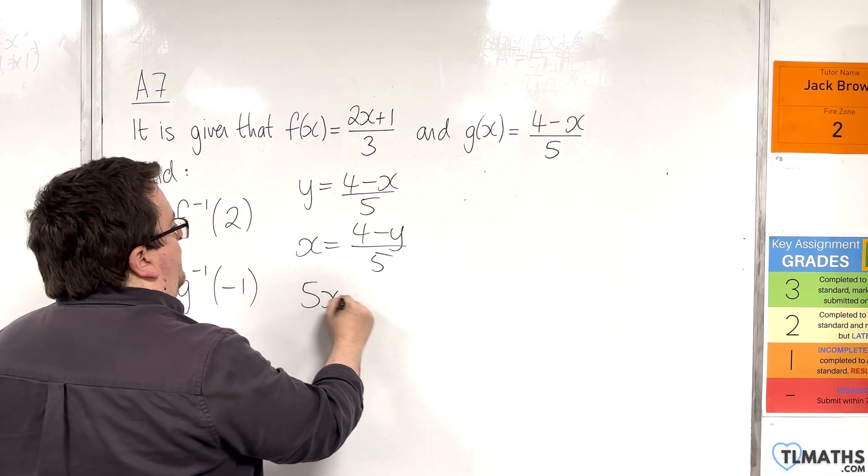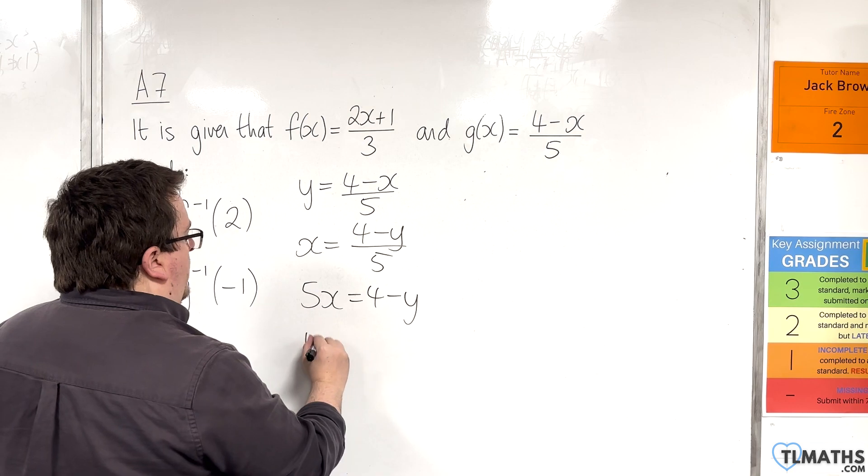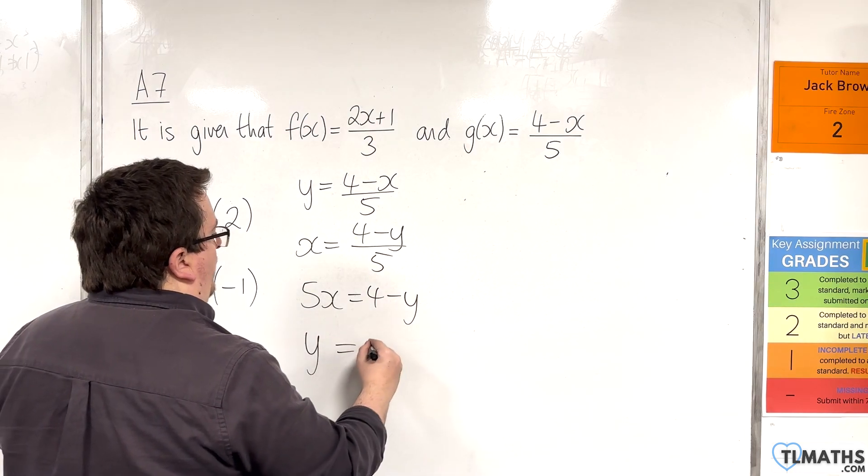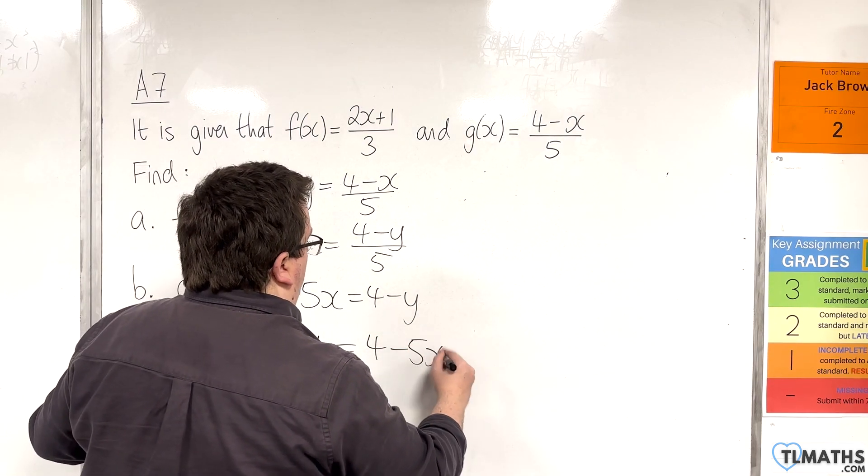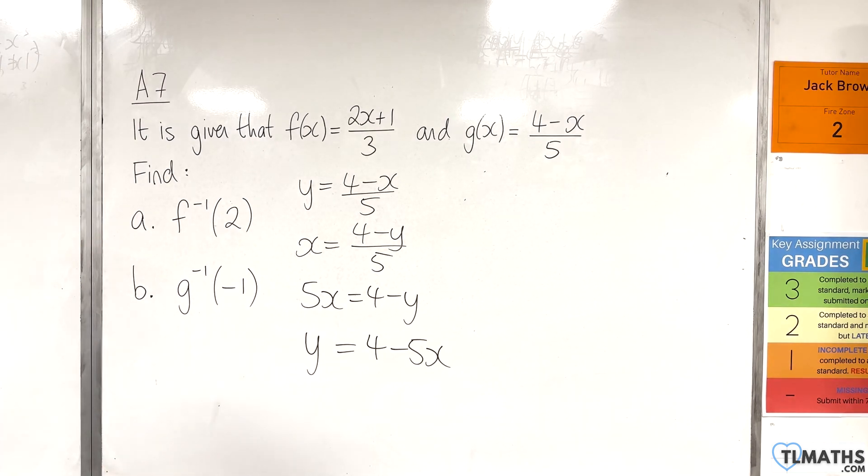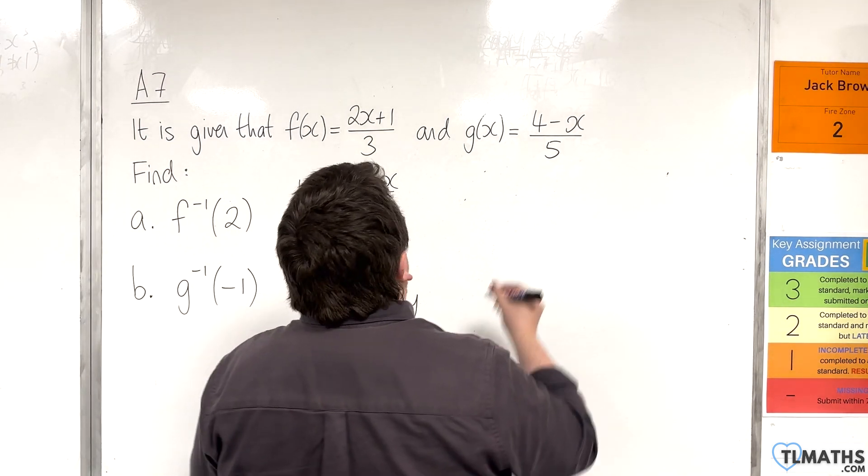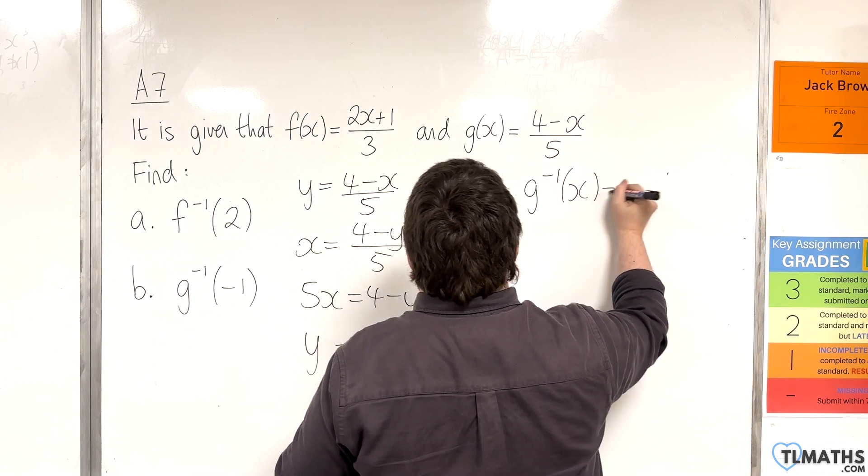Then, rearrange this to get y equals. So, multiply it up by the 5. Then, add the y onto the left-hand side, subtract 5x from both sides. And so, we've got y equals 4 take away 5x. So, that is my inverse function.